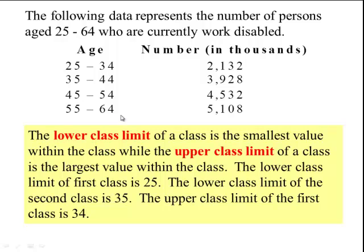The lower class limit of a class is the smallest value within the class, while the upper class limit is the largest value within the class. So the lower class limits in this example would be 25, 35, 45, and 55. The upper class limits would be 34, 44, 54, and 64.